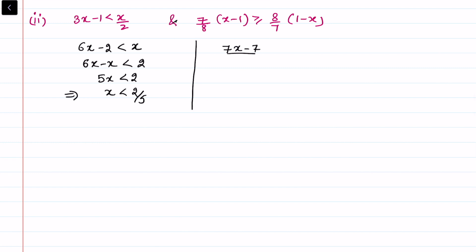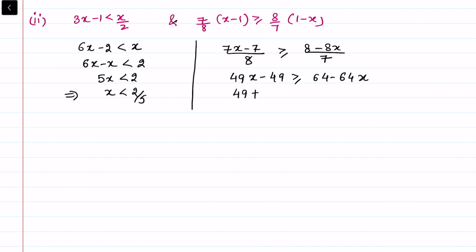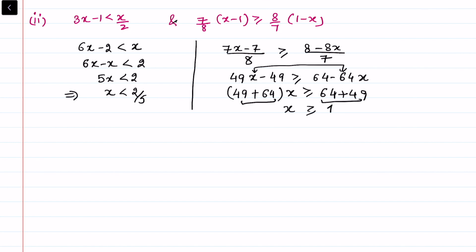For the second inequality, cross-multiplying gives 49x minus 49 greater than or equal to 64 minus 64x. Taking x terms to one side and constants to the other: 49x plus 64x greater than or equal to 64 plus 49. Combining, we get 113x greater than or equal to 113, so x is greater than or equal to 1. Now, one inequality says x less than 2 by 5 and the other says x greater than or equal to 1.